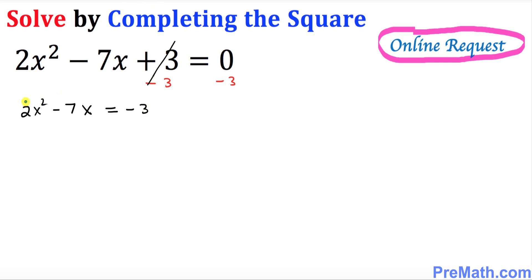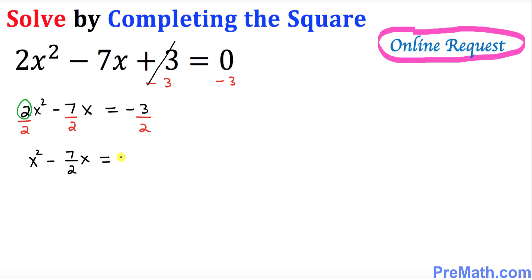The next step is to make sure that our leading coefficient is 1. That means we must divide by 2 across the board — every term. So we get X squared minus 7 over 2 X equal to negative 3 over 2.